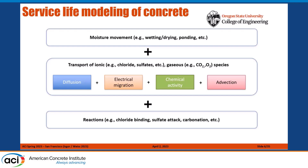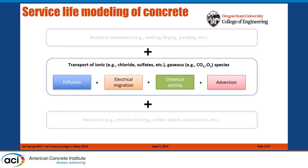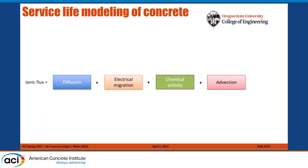Transport of ionic species in concrete is a major problem. There are multiple mechanisms by which this can occur: diffusion, electrical migration, chemical activity, advection. But none of these could happen if you don't have moisture in the system, so moisture transport is part of this problem. When dealing with moisture transport, you also have to deal with heat transfer. So this problem is rather complex. Today we're going to focus on the ionic transport part and ignore the moisture and heat transport aspects.